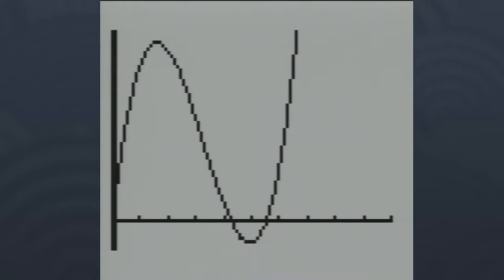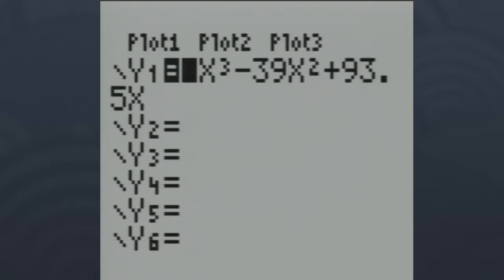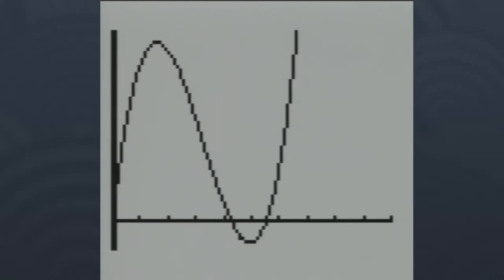Remember what this graph represents: the x-coordinate represents the height of the box — which is the size of the square we cut out — and the y-values represent the volume. Every y-value on this curve represents the volume for a box of a certain height. This is specifically for an 8½ by 11 piece of paper; if we changed the size of the paper we'd have a different equation. Each equation is tailor-made to the size of the sheet we begin with.